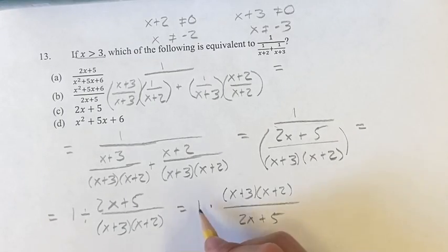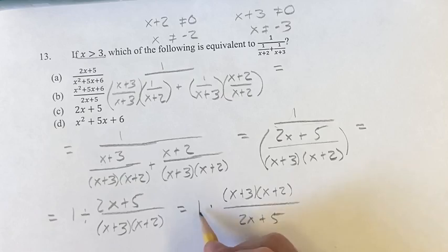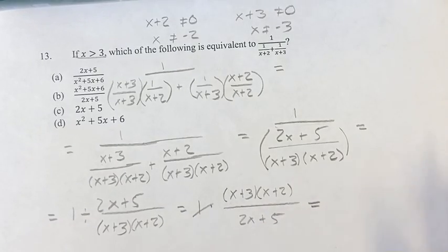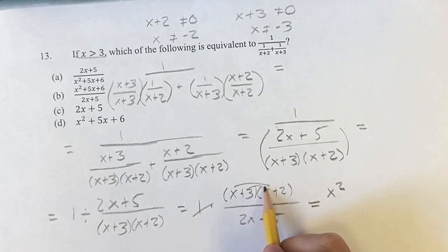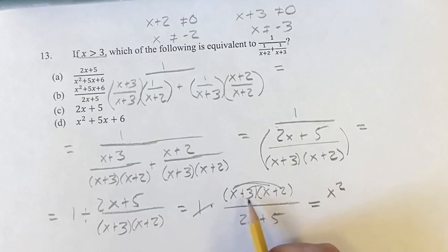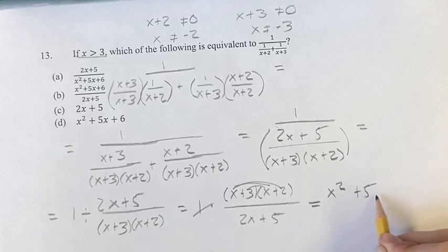Okay continuing, 1 times this is just this, so we can ignore the 1. And we're left with distributing the numerator, we have x squared plus 3x plus 2x is plus 5x, plus 3 times 2 is 6.